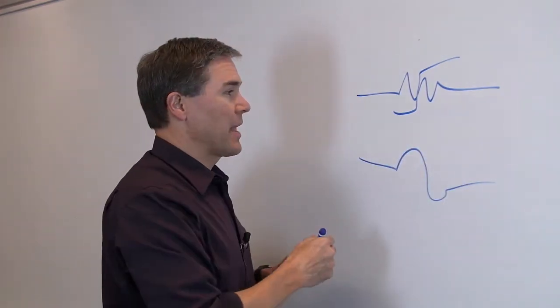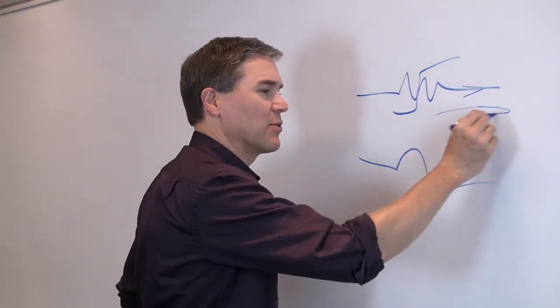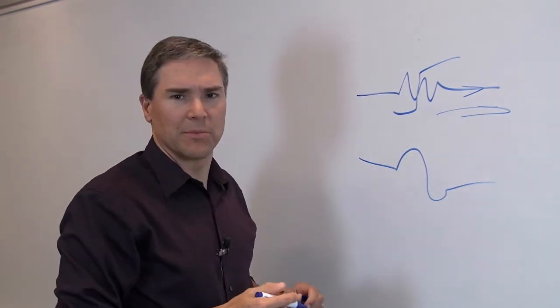When a poly switch device trips, it goes to a high resistance condition, but it allows a little bit of leakage current to flow through here, and dissipates a little bit of power to maintain itself in the tripped condition.